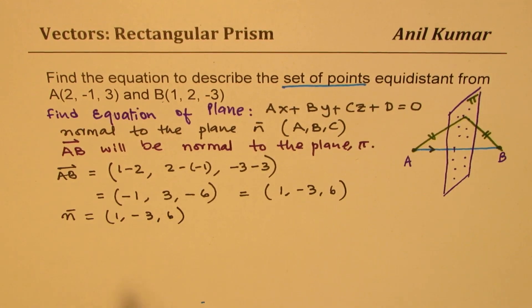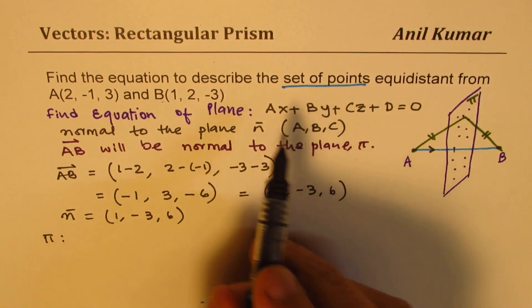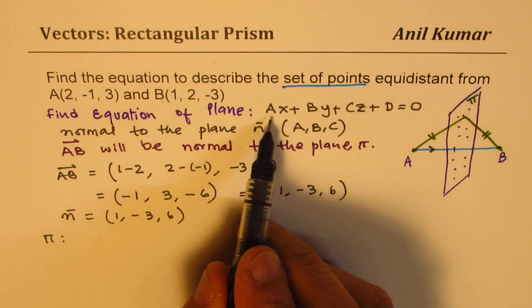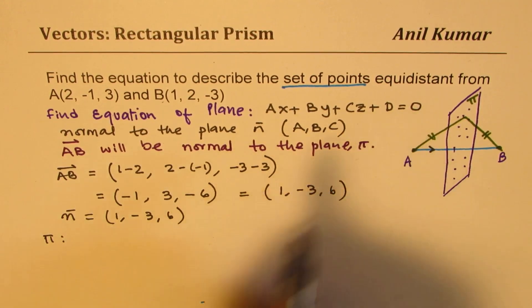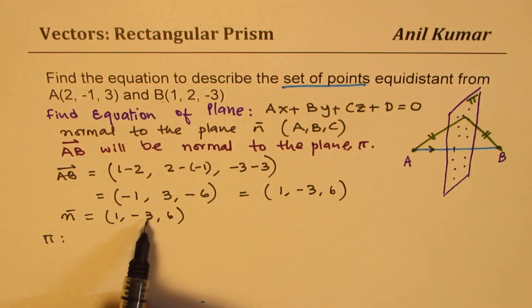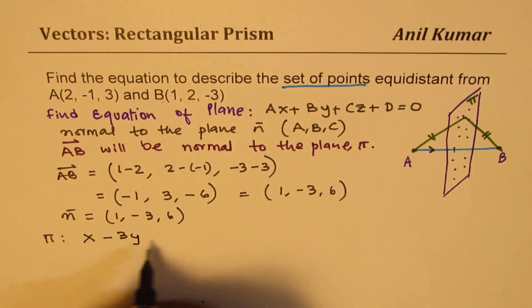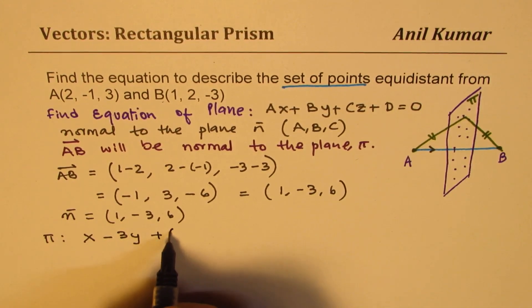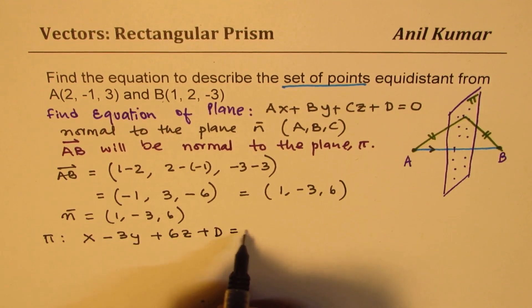Now if the normal is one, negative three, six, then the equation of the plane is: X minus 3Y + 6Z + D = 0.